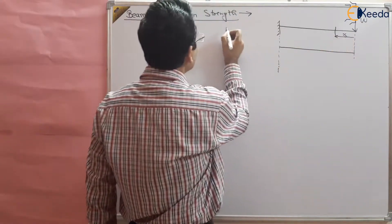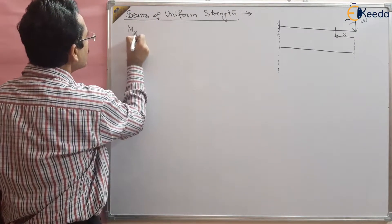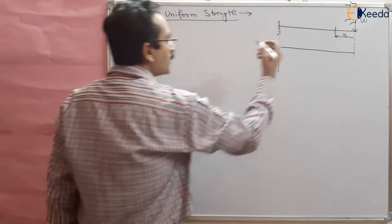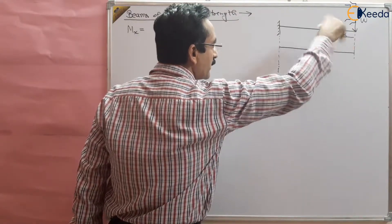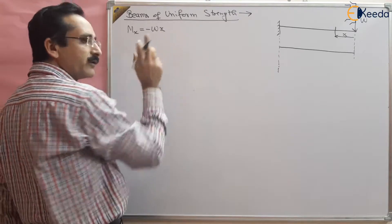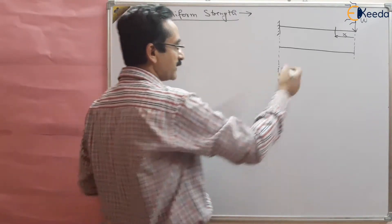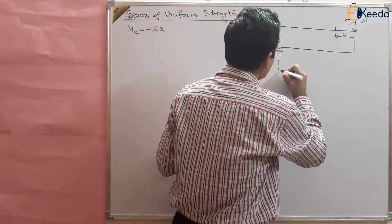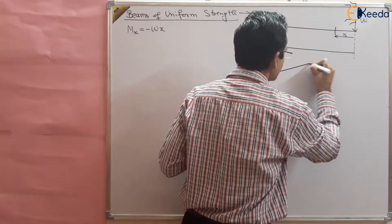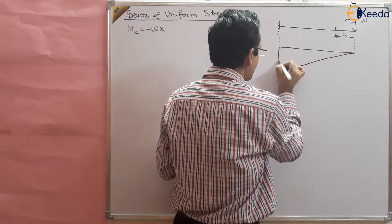The bending moment at a distance x will be equal to wx, and this is a hogging bending moment, so this will be minus wx. We have already studied this in shear force and bending moment diagrams. You will get a straight line curve of the bending moment diagram like this.